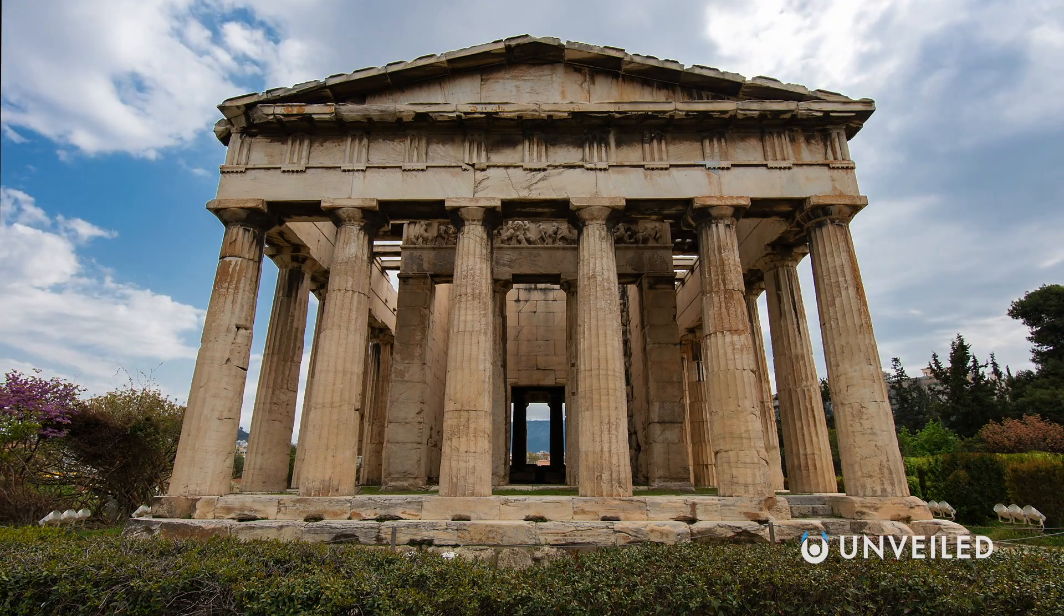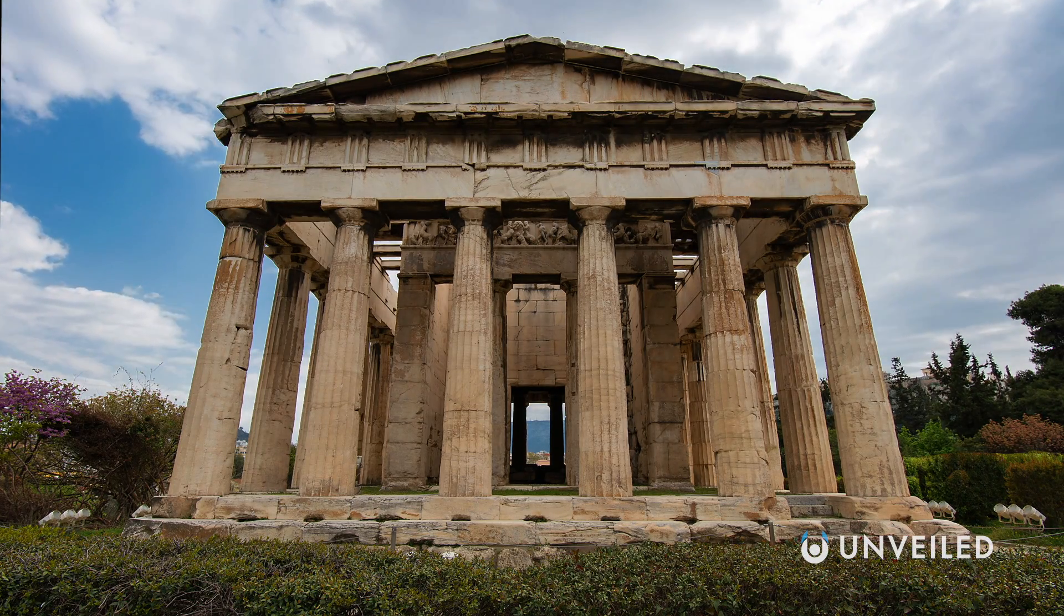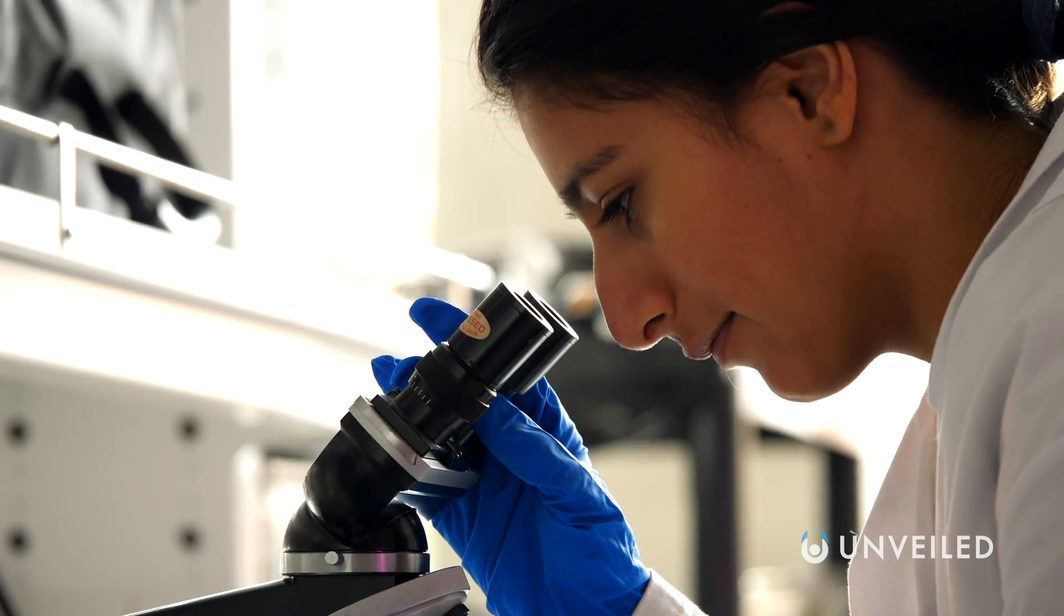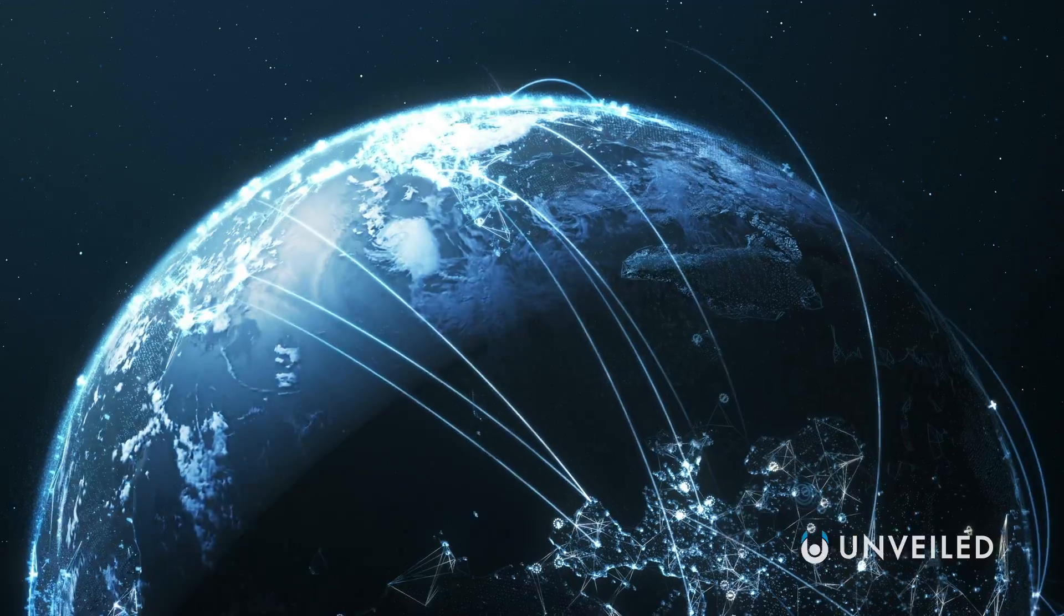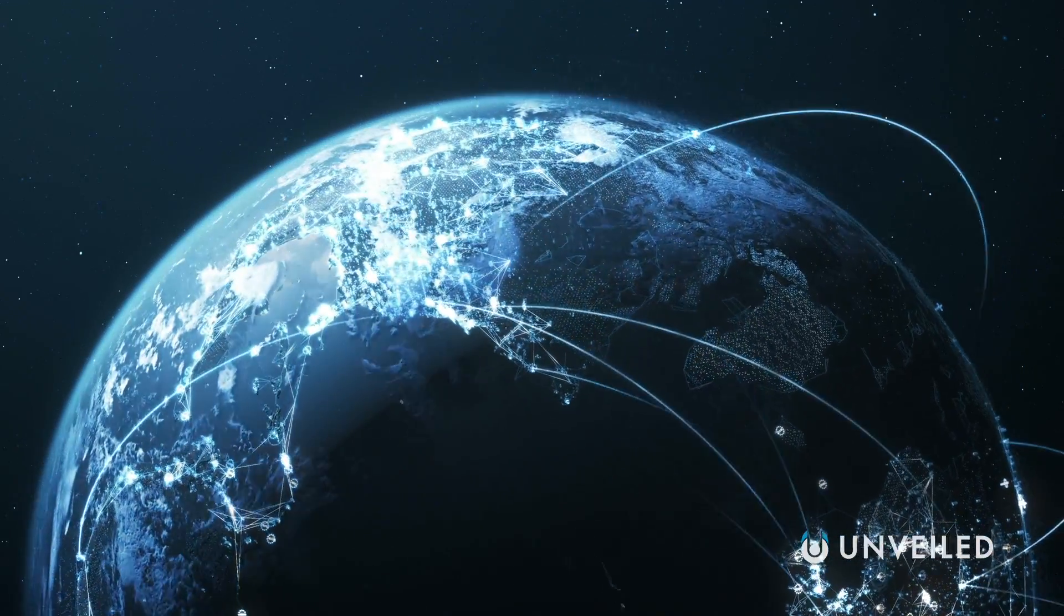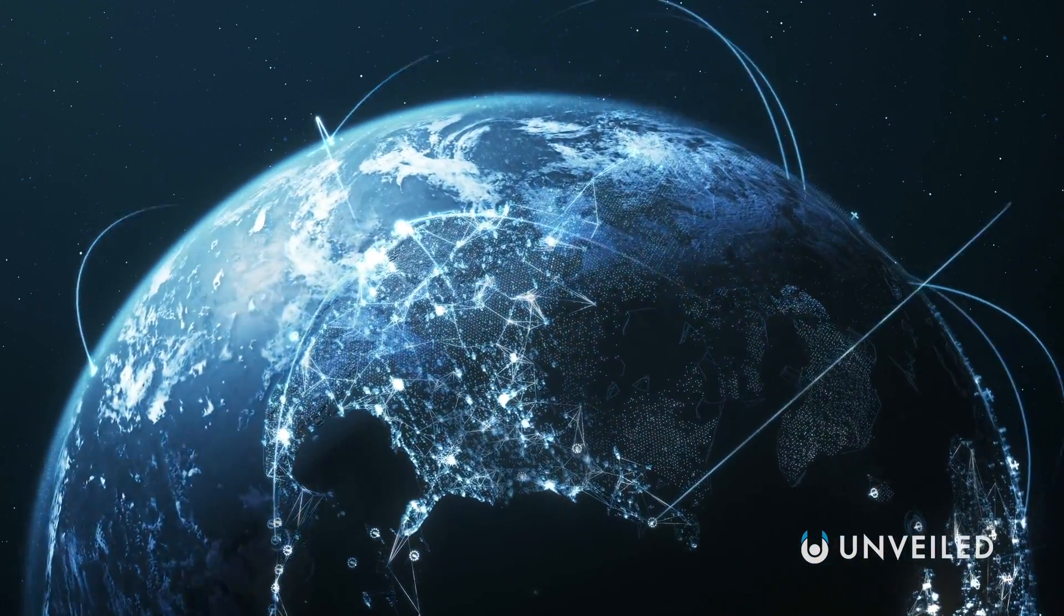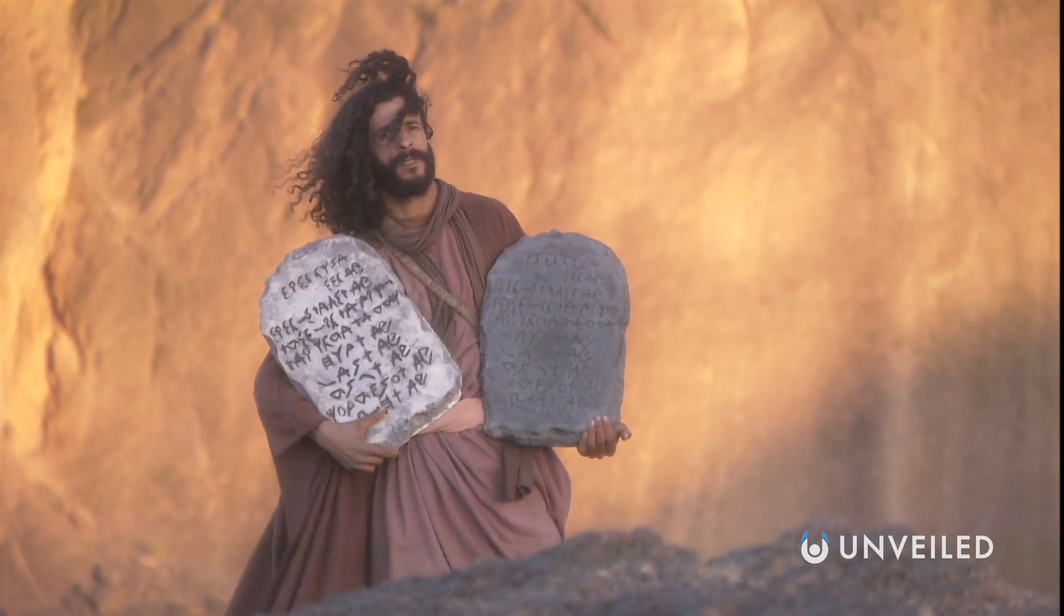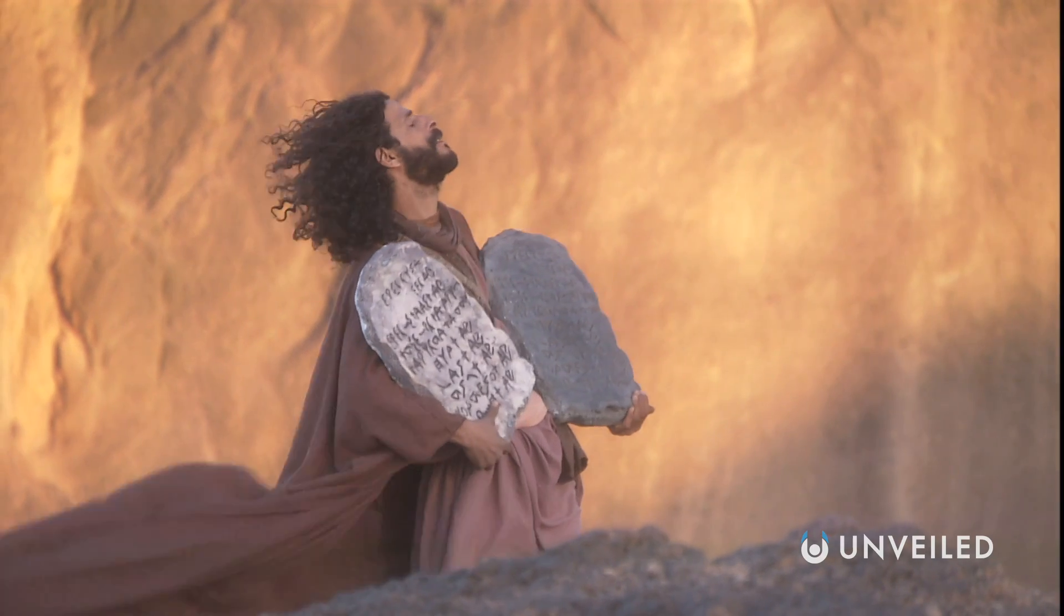Human beings have guessed at the shape of our universe for millennia. We have an intrinsic desire to classify the world we live in and make some order out of the chaos of uncertainty. To this end, one of our most central desires is to know what it looks like. Religious texts have answered this question in different ways throughout history.